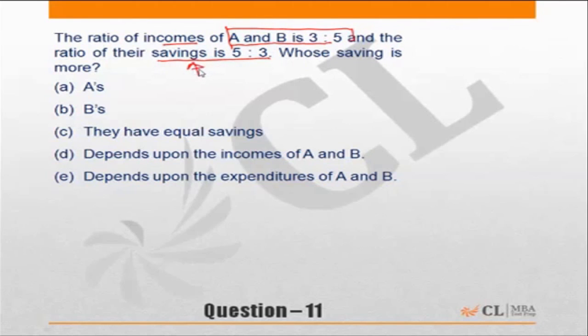When I'm given ratio of savings is 5 is to 3, that means savings of A will be higher than that of B. For every 3 rupees that B saves, A is saving 5 rupees. So obviously A should be the answer. But this question tends to confuse people because they are probably looking at ratio of income.